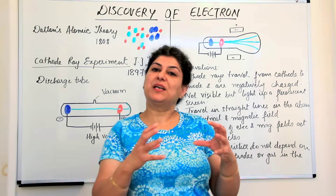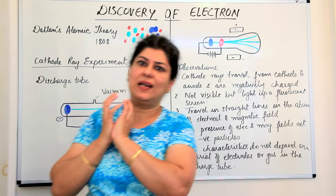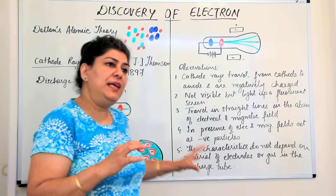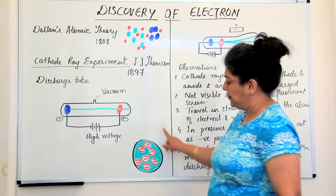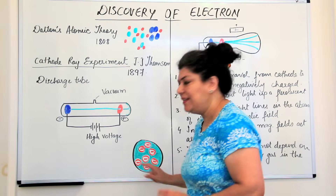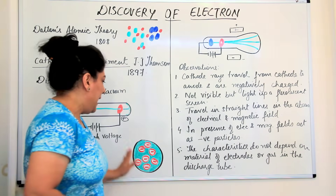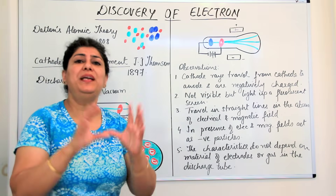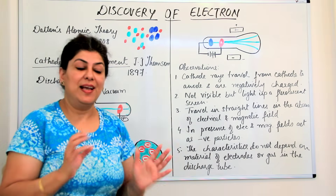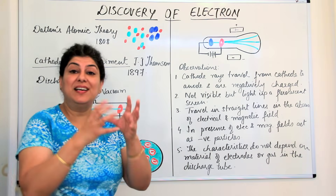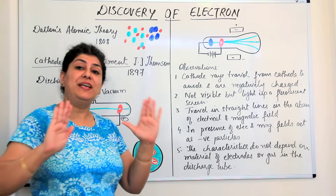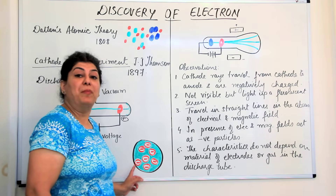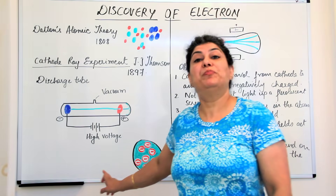But then he asked: if an atom consists of electrons, what should an atom look like? On the whole, he knew an atom is neutral, and since the atom is neutral on the whole, he imagined it should look somewhat like a plum pudding. Like plums in a pudding, the negatively charged electrons are embedded in a positively charged medium — like seeds in a watermelon or raisins in a cake. The positive and negative charges are equal, so this model was known as J.J. Thomson's plum pudding model.